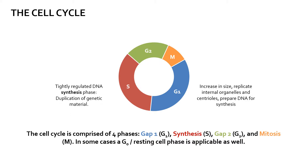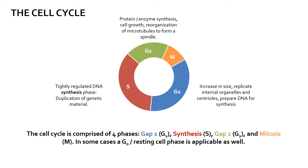The second phase, or S phase, is the part of the cycle where the cell duplicates its DNA. And the third phase, G2 or GAP2, is a phase where the cell continues to grow, produces enzymes necessary for the process of cell division, and prepares itself for mitosis.